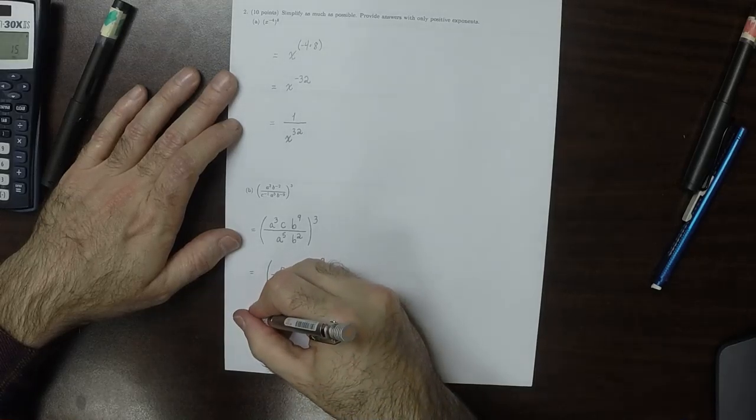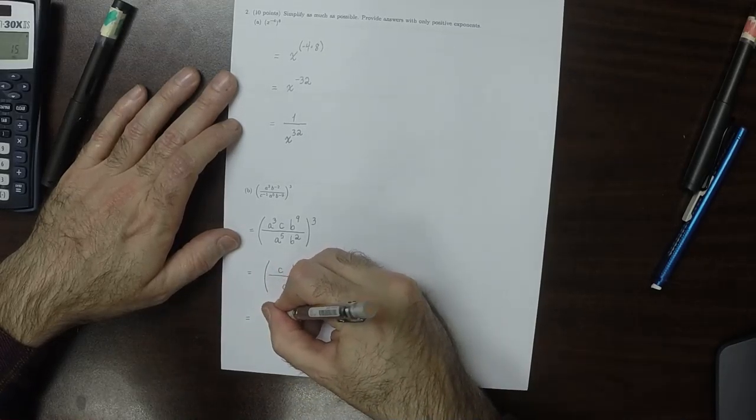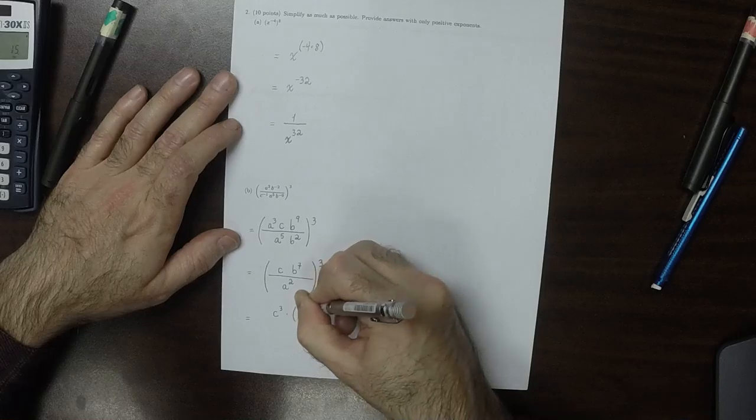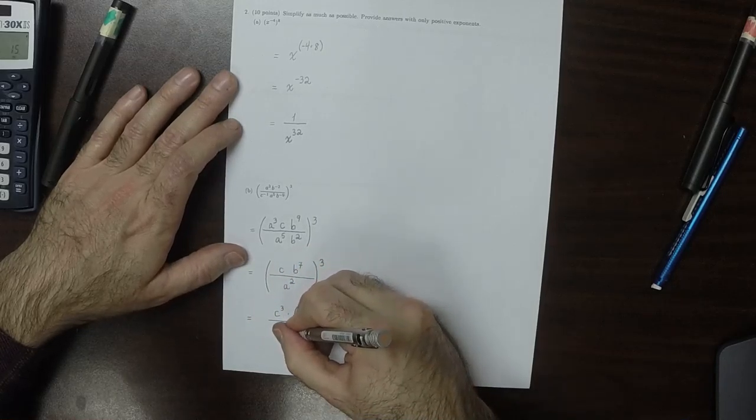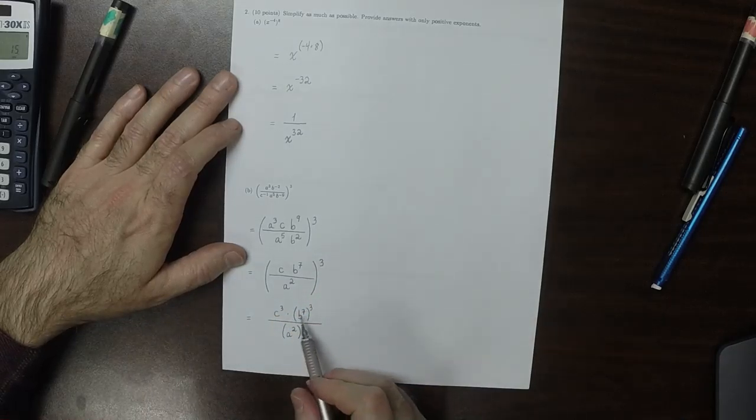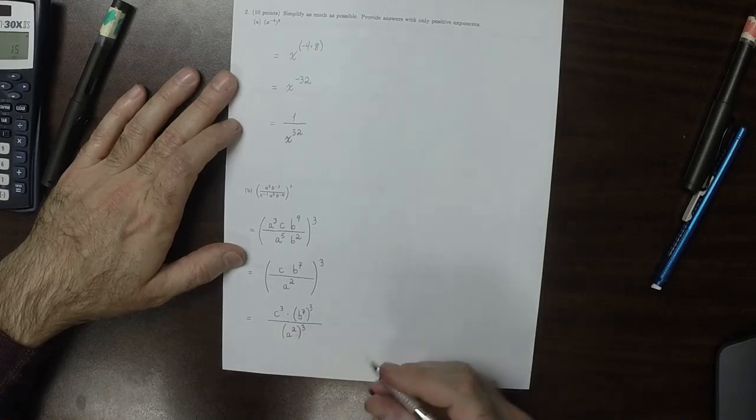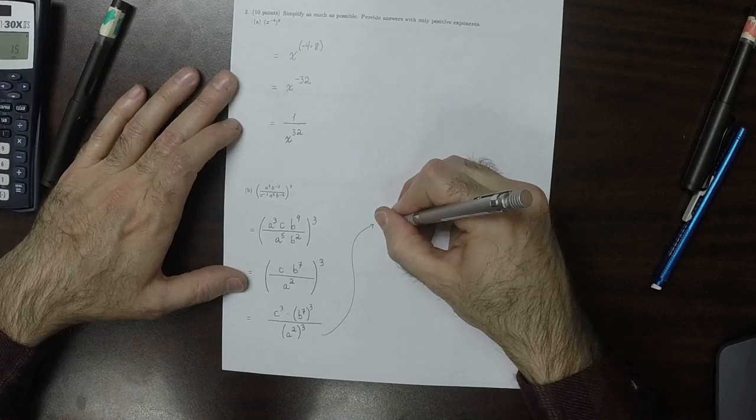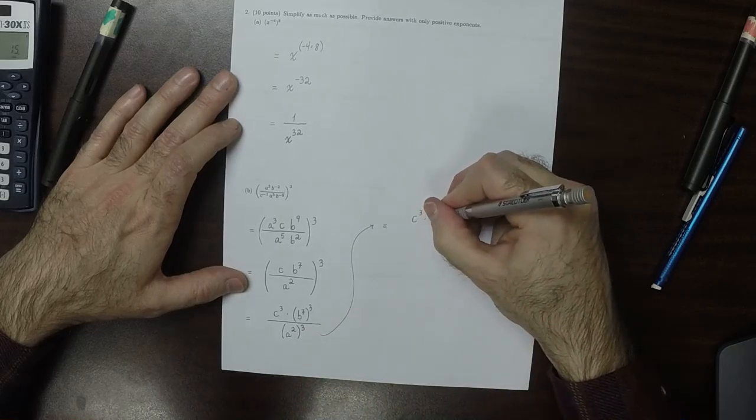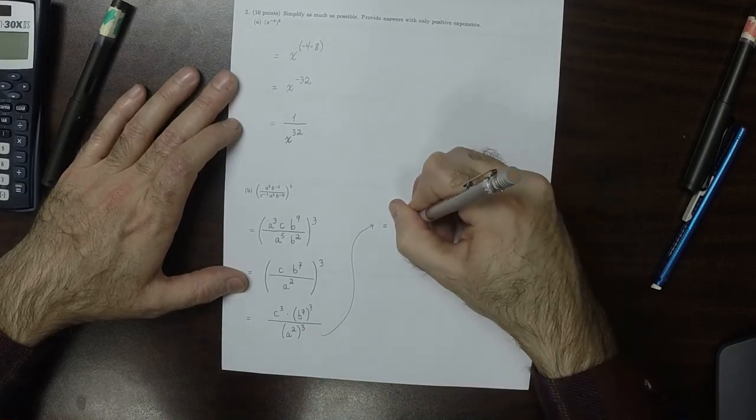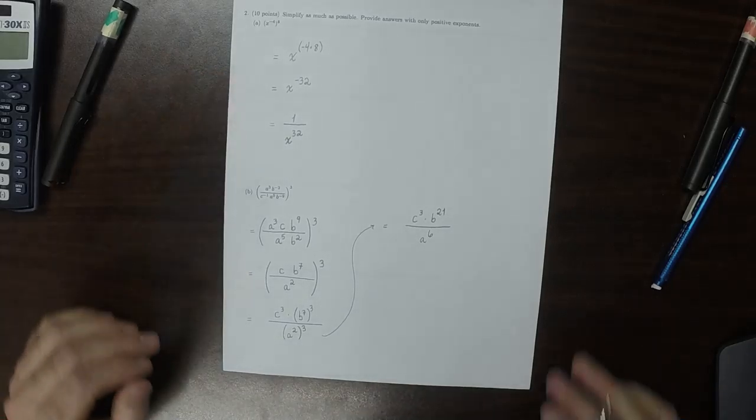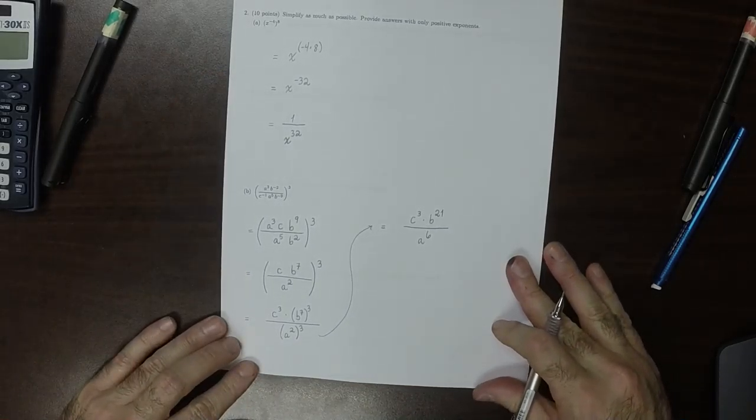So now it's time to distribute the cube. This will be c cubed multiplied by b to 7 cubed divided by a squared cubed. Now c cubed is done and then these are iterated exponents. So this will be c cubed and b to 7 to 3, that's b to 21, divide by a to 2 to 3, that's a to 6. And that's the answer to part 2.